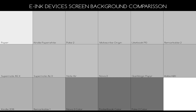As we can see, the brightest devices on this list are the Kindle Paperwhite and the Poke 2 — very, very close to each other, but the Kindle Paperwhite was the brightest. Then we get to an area starting with the MobiScribe Origin all the way to the Note Air where, for all intents and purposes, they are pretty much identical: MobiScribe Origin, Lightbook P10, Remarkable 2, SuperNote A5X, A6X, A6, A5, and Note Air. They all fit into the same category and it's very interesting that they all get virtually the same number.